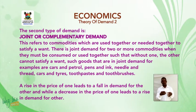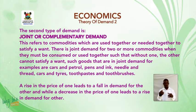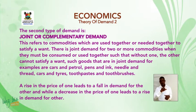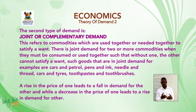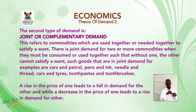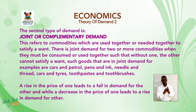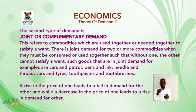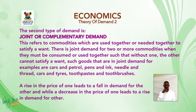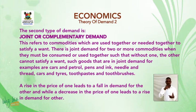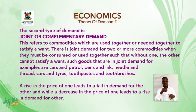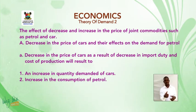There is joint demand for two or more commodities when they must be consumed or used together such that without one, the other cannot satisfy a want. Such goods that are in joint demand include: cars and petrol, pens and ink, needle and thread, cars and tires, toothpaste and toothbrushes. A rise in the price of one leads to a fall in demand for the other, while a decrease in the price of one leads to a rise in demand for the other.